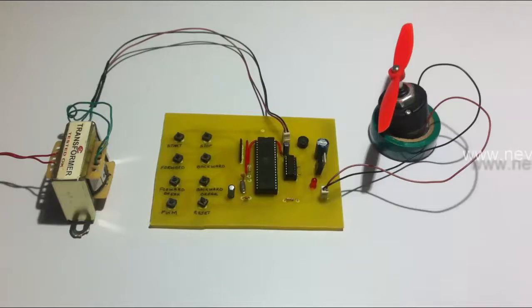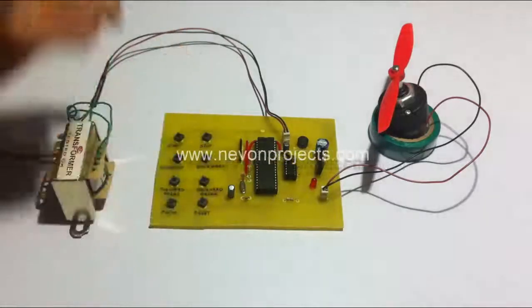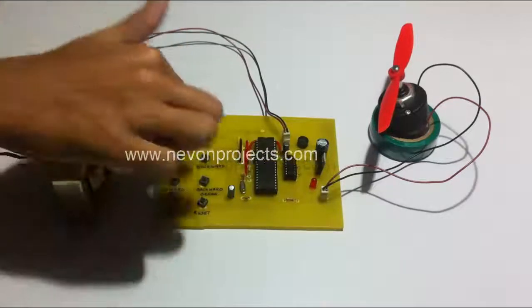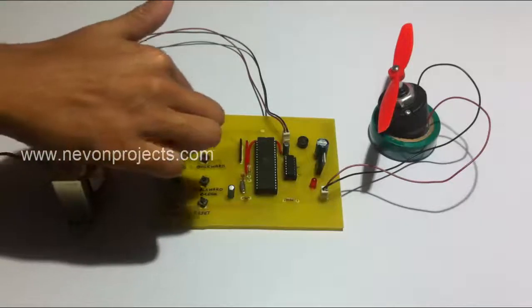The microcontroller is used to control the DC motor speed, direction, as well as braking. For this purpose, we use these push buttons here, labeled with their functionalities: start, stop, forward, backward, forward brake, and backward brake.